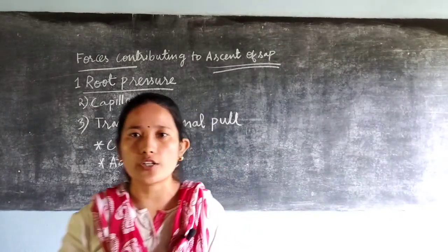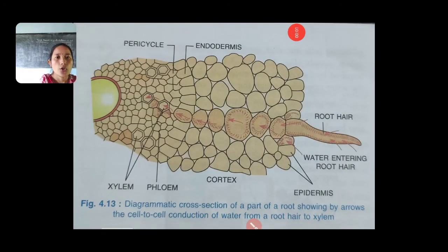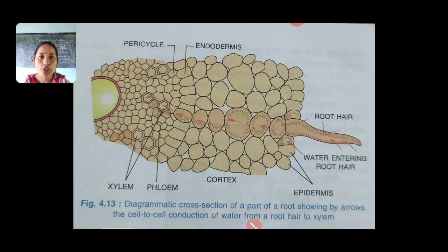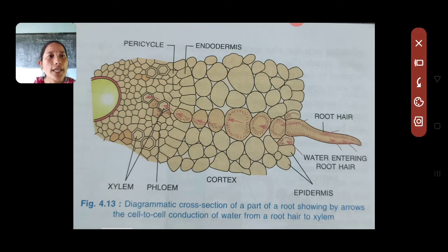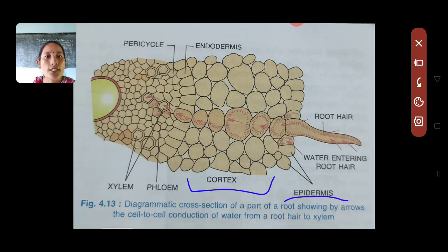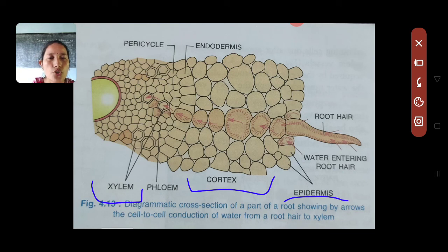The first structure is a cross section of a part of a root. They will generally ask you to label the different parts of the root cells. Here you have root hairs, which are extensions of the epidermal cell only. Then you have an epidermis layer, then a cortex region, and the central part is your xylem. Surrounding the xylem is your phloem region.